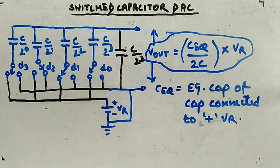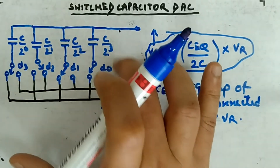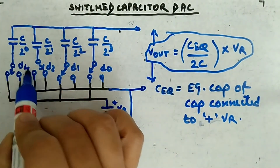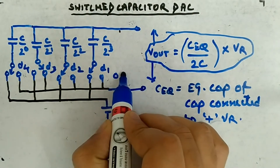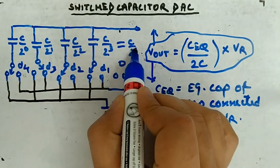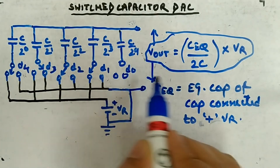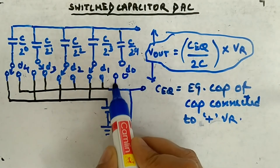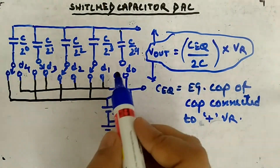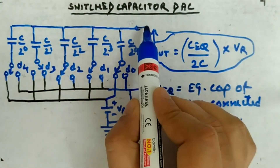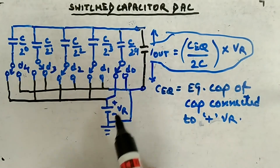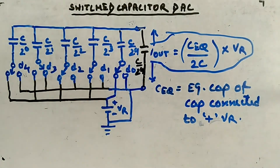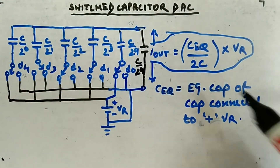Just remember this expression — you don't have to solve a lot. If you want to design for 5 bits, you will have D4, D3, D2, D1, and then D0. Each bit's capacitor will be connected to either positive Vr or minus Vr via a switch. You will also have an extra capacitor equal to this LSB capacitor — C divided by 2 to the power 4 — directly connected to ground. That extra capacitor is the important one, and this expression is what matters.